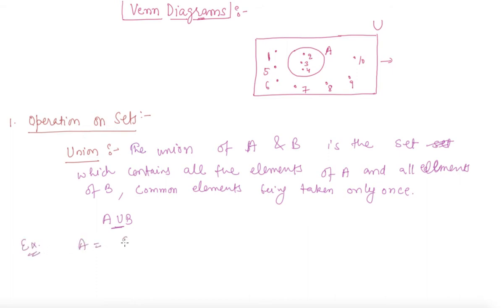Let us suppose a set A is given as 1, 2, 3, 4 and a set B given as 3, 4, 5, 6. So A union B will be 1, 2, 3, 4, 5, and 6.